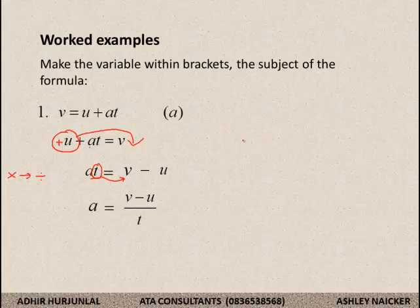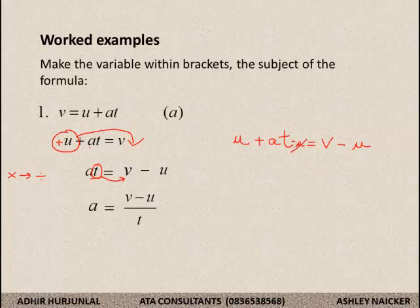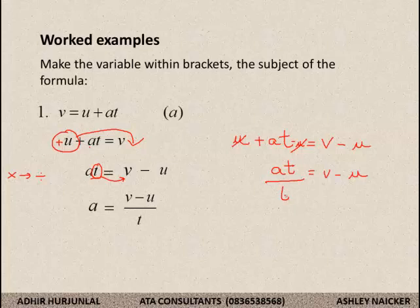Let us consider the alternative method. What I would have had in my second step is u plus at which is equal to v. I do not want to see the u on the left-hand side, so I subtract u from the left-hand side. To balance it, I subtract u from the right-hand side as well. The two u's cancel away, and I am simply left with at is equal to v minus u. Then, on the left-hand side, I do not want to see the t, so I divide both sides by t. The t's cancel away and I am left with a is equal to v minus u divided by t.